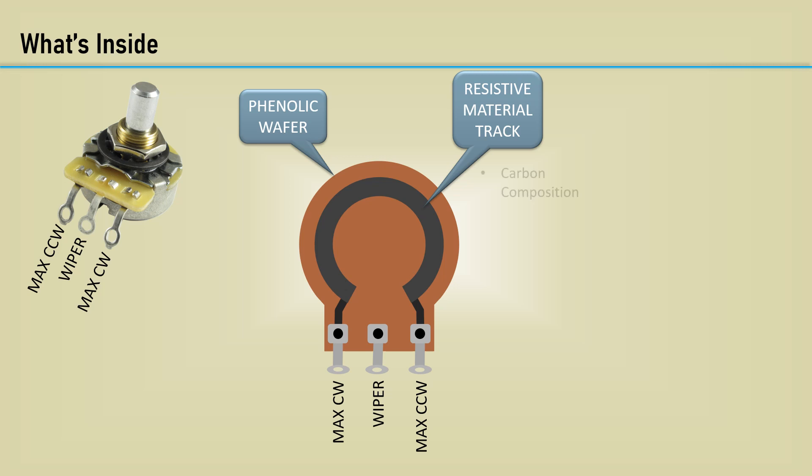The resistive material can be a carbon composition, conductive plastic, cermet, which is an abbreviation for the aggregate of ceramic and metals. They are also made with wire-wound elements, but are not used for small signal audio applications. It has a metallic wiper that conducts from the center wiper terminal to the resistive track, here at the maximum counterclockwise position. Note that we are looking at the bottom side of the pot, so the maximum counterclockwise position is on the right.